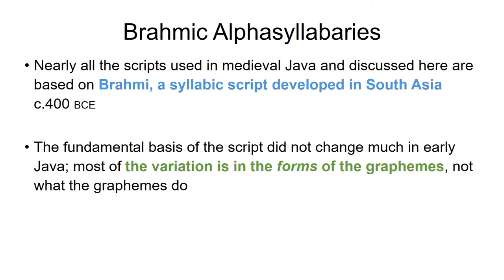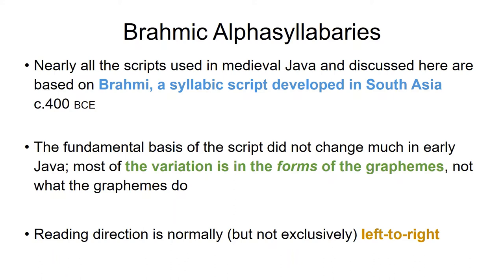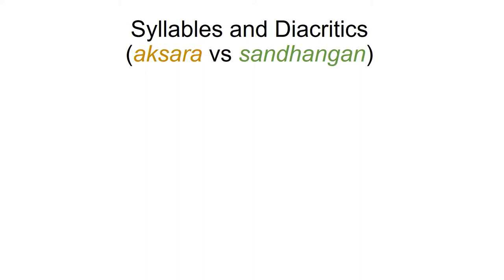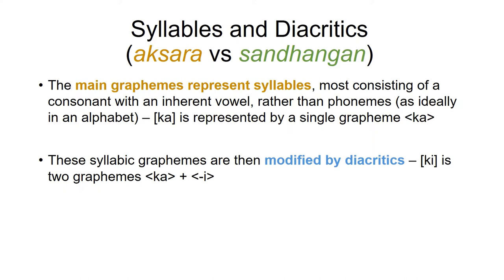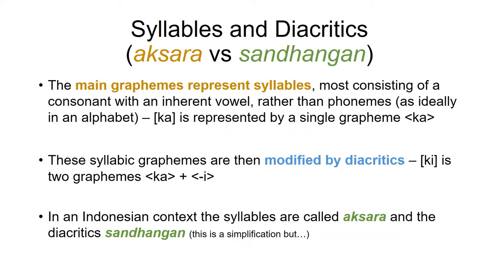Reading direction with most of these scripts is left to right, with some exceptions. The main graphemes represent syllables — normally a consonant with an inherent vowel. So the syllable ka is represented by a single grapheme, and if you want to write ki, you add a diacritic. In Indonesian, the syllables are known as aksara and the diacritics as sandangan — the Javanese word for clothing — because they clothe the aksara.